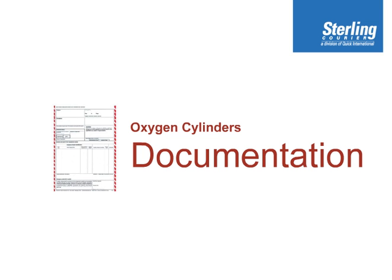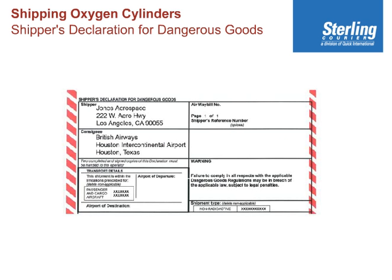Documentation for shipping oxygen cylinders. The shipper's declaration for dangerous goods must be completed as follows. The top part, which is relatively self-explanatory, includes the name and address of the shipper and consignee, and the number of pages. Some people ship a lot of dangerous goods at one time. In this instance, we have one page, so this is page one of one.